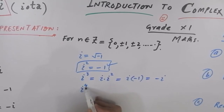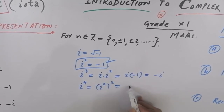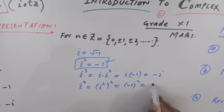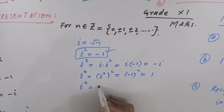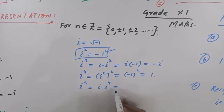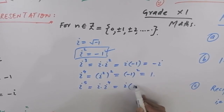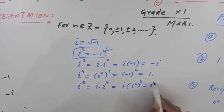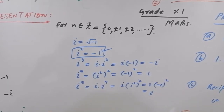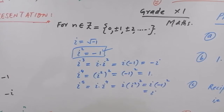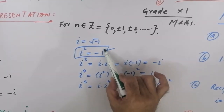Now IOTA to the power 4: we can change IOTA⁴ to (IOTA²)², and since the value of IOTA² is minus one, we get (−1)², which becomes plus one. So the value of IOTA⁴ is one.